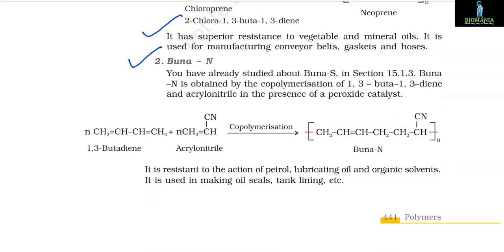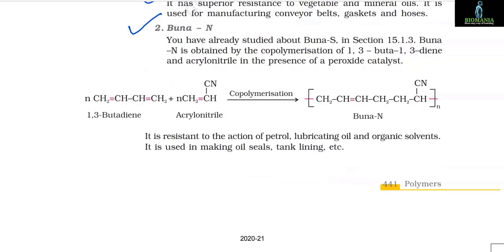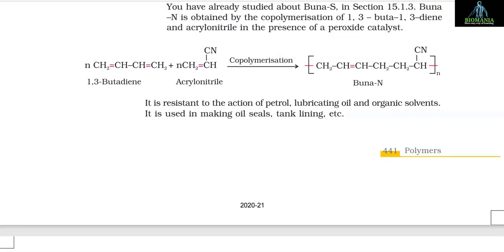2. Buna-N: Buna-N is obtained by the co-polymerization of 1,3-butadiene and acrylonitrile in the presence of a peroxide catalyst. It is resistant to the action of petrol, lubricating oil and organic solvents, and is used in making oil seals and tank linings.